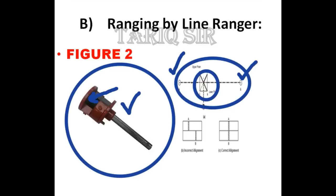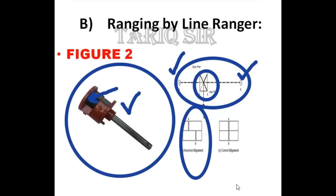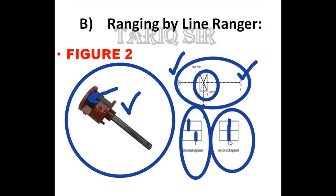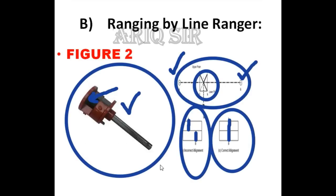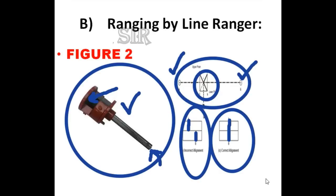Now shown here is the incorrect alignment — the incorrect position of the ranging rod whose reflection is seen in the line ranger. When these two ends meet — the line from one side and the line from the other side — as shown in the other figure where they meet at a point, you drop a perpendicular right onto the ground from that point. The line ranger is held vertical, you drop a point onto the ground, and right there you place a ranging rod. This is how we use a line ranger.